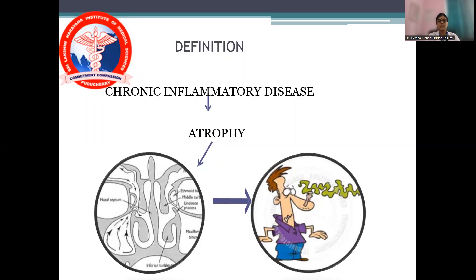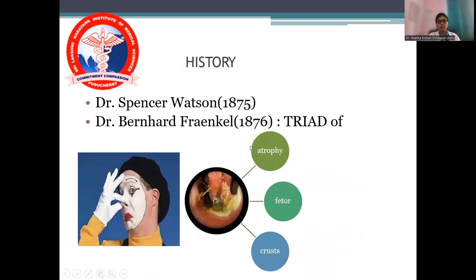Atrophic rhinitis is a chronic inflammatory disease of the nose and paranasal sinuses wherein you see atrophy of the mucosa lining the nose as well as paranasal sinuses. Not only the mucosa — there is also atrophy of the underlying bone. This condition was first described by Dr. Spencer Watson in 1875. It is most common in females, especially menopausal women where there is deficiency of estrogen. Whenever there is hormonal deficiency, especially in women, you come across this condition.